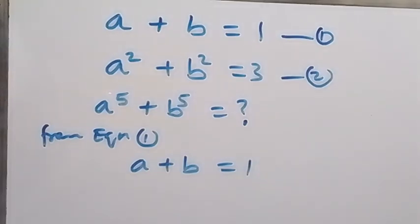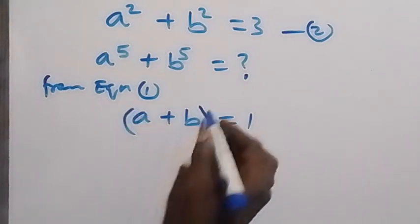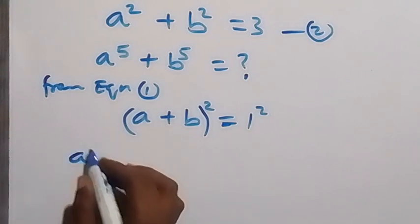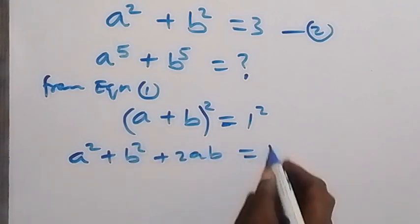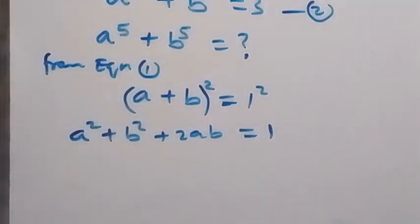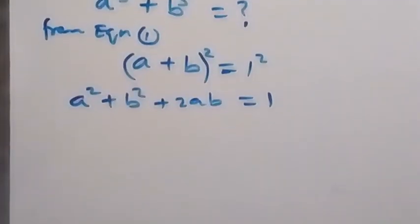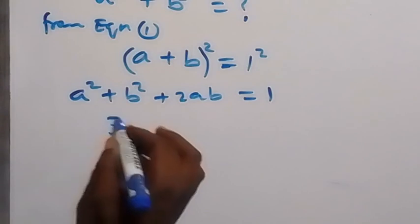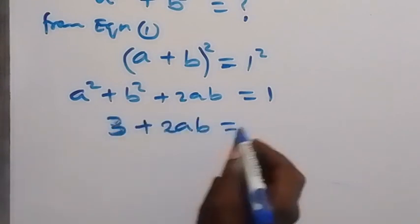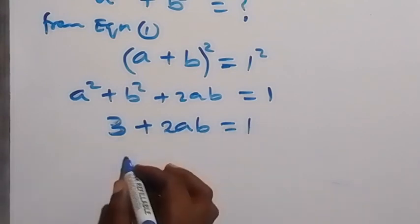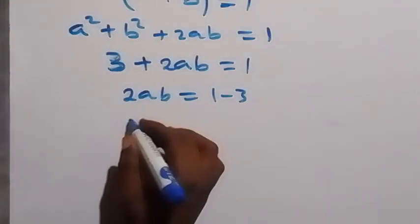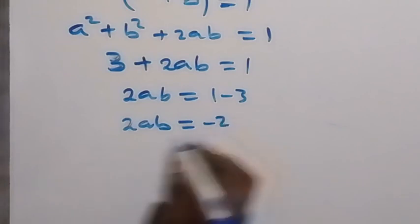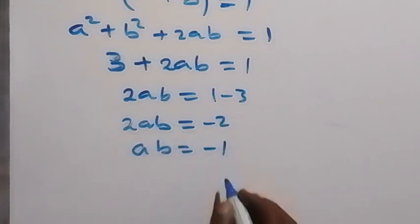Now let's square both sides of equation 1. Expanding gives us a squared plus b squared plus 2ab equals 1. From equation 2, a squared plus b squared equals 3. Substituting, we get 3 plus 2ab equals 1, so 2ab equals 1 minus 3, which is minus 2. Dividing both sides by 2, ab equals minus 1.